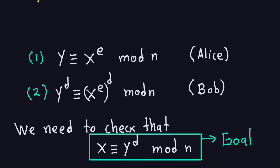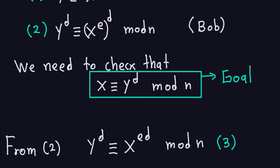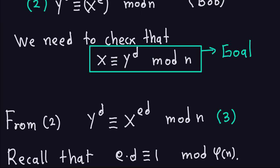Remember, there was a particular way in which we chose those numbers, and that's going to play a big role in proving this. Looking at equation 2, I use the property of exponents — multiplying E and D — so Y to the D is congruent to X to the E·D modulo N. Now let's recall something important: this is where the choice of E and D takes an important place. When we chose E and D, we chose them so that E times D is congruent to 1 modulo phi of N. If you don't remember that, go back and see the video on how we set up the RSA.